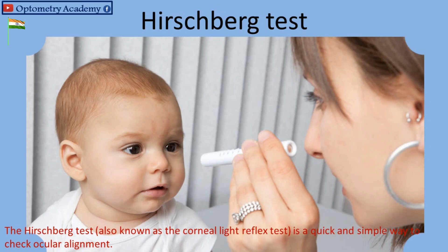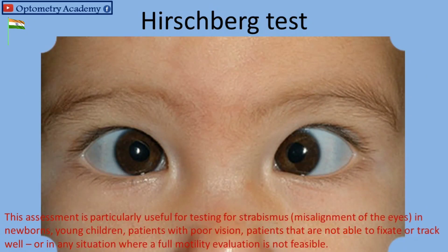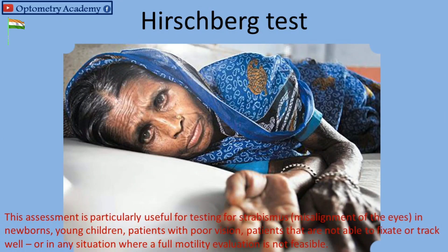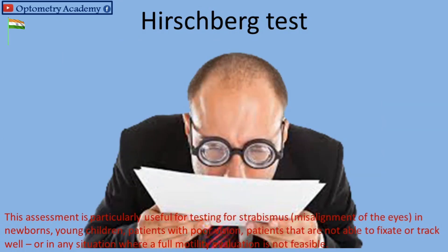The Hirschberg test is a quick and simple way to check ocular alignment. This assessment is particularly useful for testing for strabismus in newborns, young children, patients with poor vision, patients that are not able to fixate or track well, or in any situation where a full mobility evaluation is not feasible.